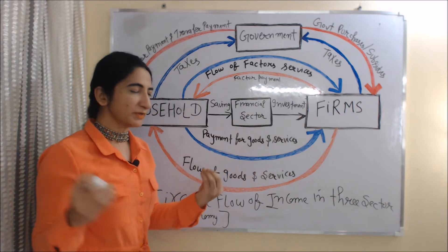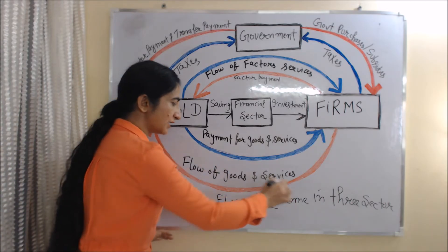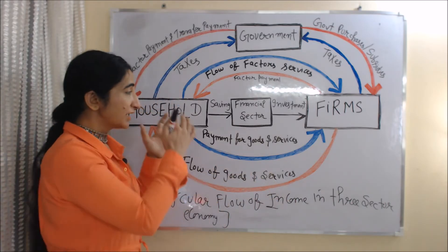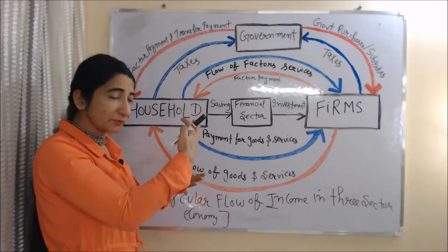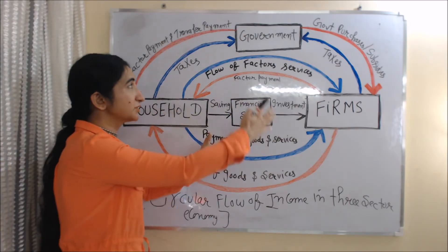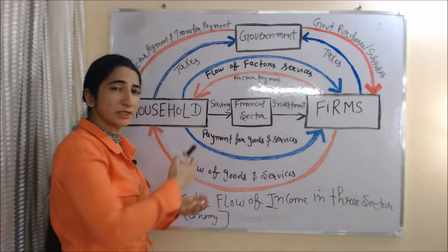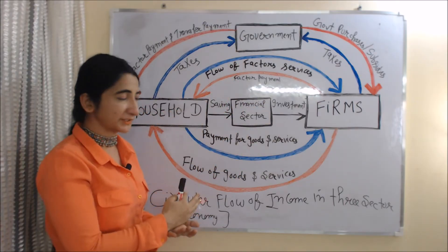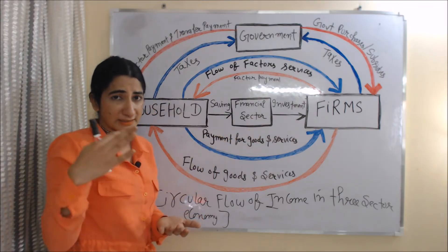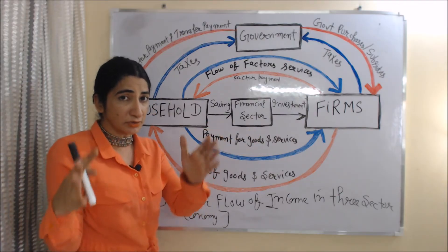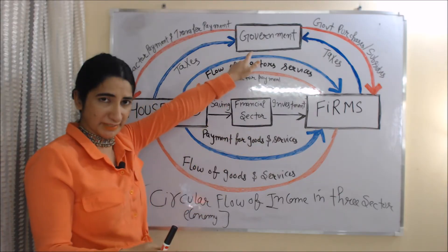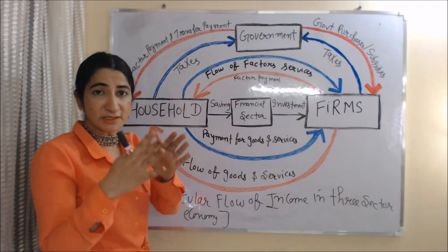Now we will see the circular flow of income in a three sector economy. Here, apart from including household and firms, we also include government. In this figure, everything is the same as we earlier discussed. The only new thing we add here is government.